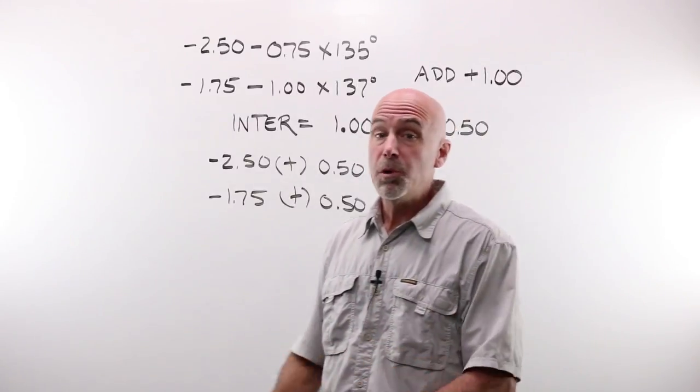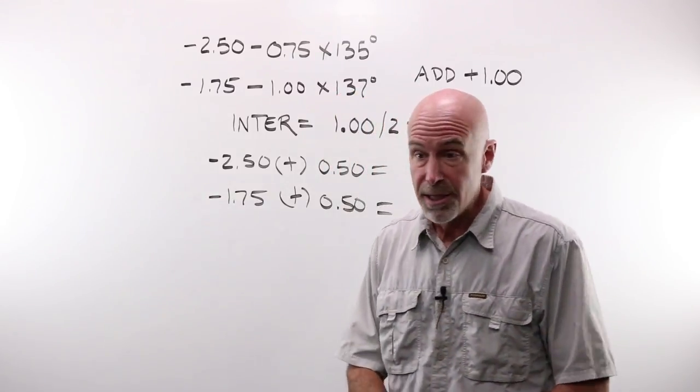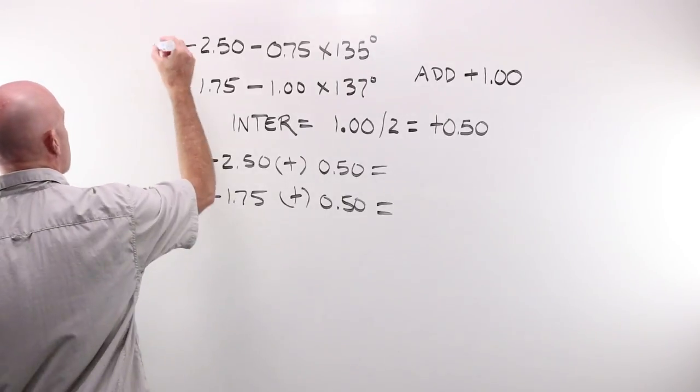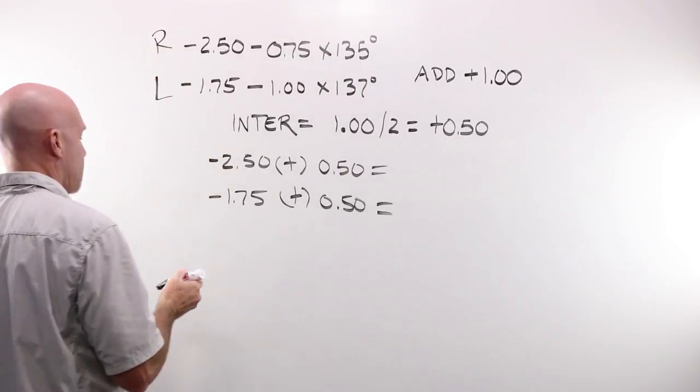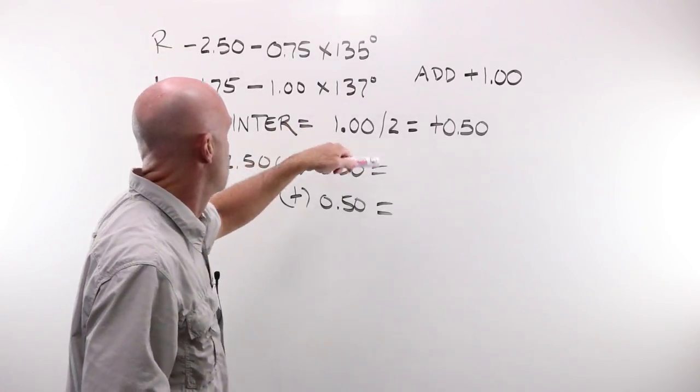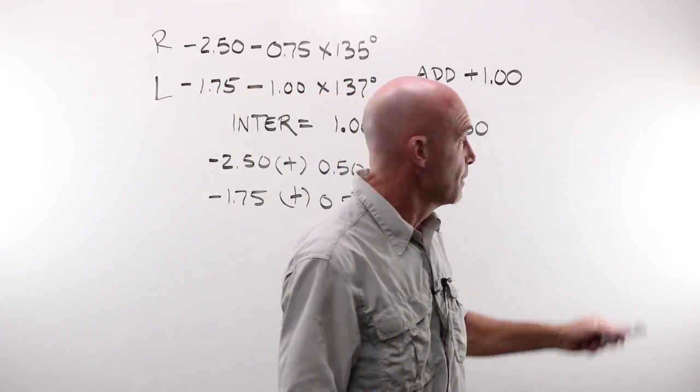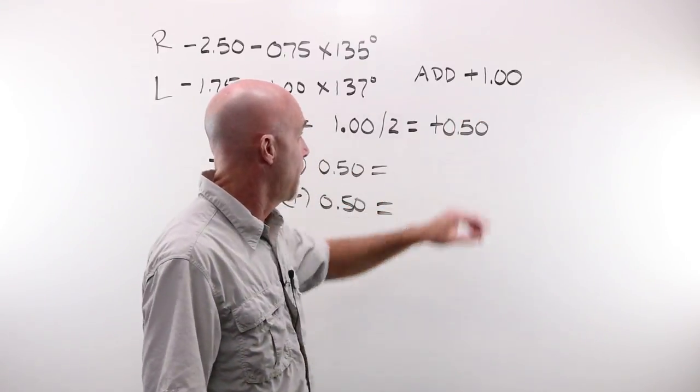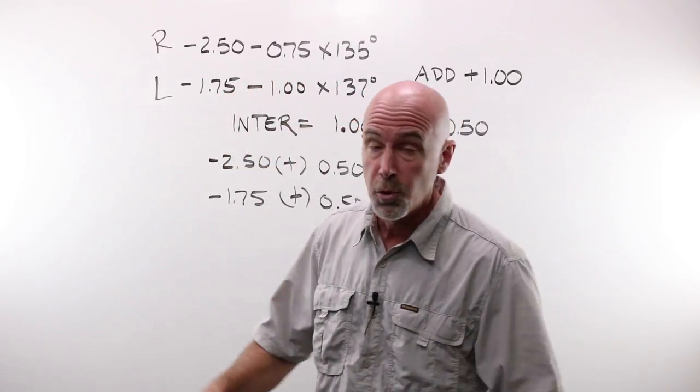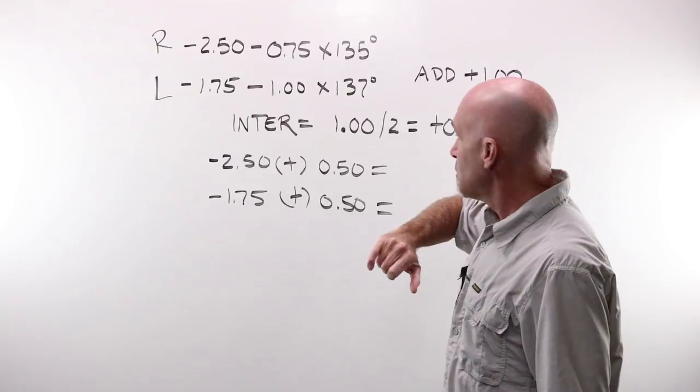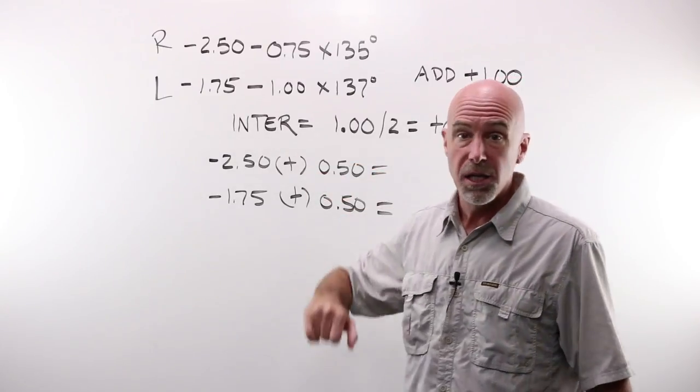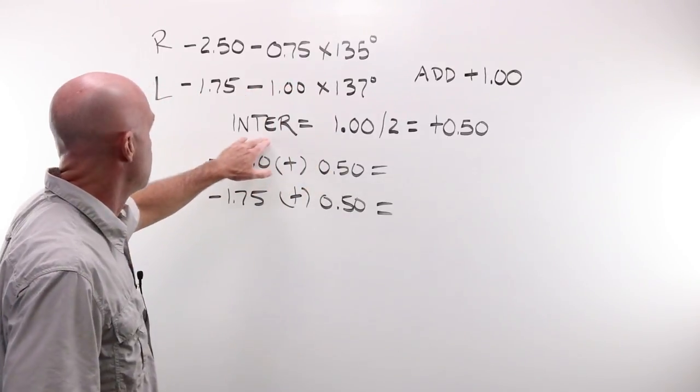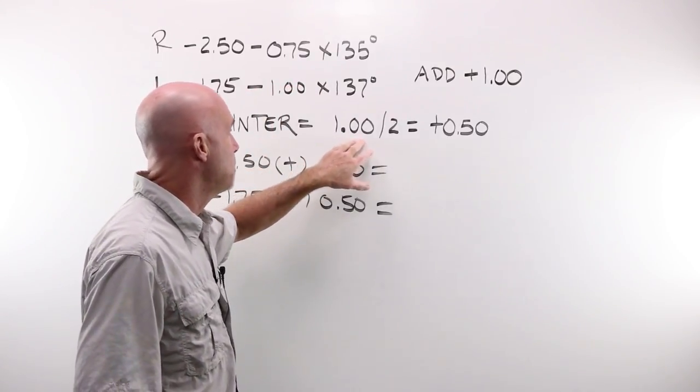Let's look at this example, extraordinarily realistic. -2.50 -0.75 at 135 in my right. In my left I've got -1.75 -1.00 at 137. This person just turned 46 years old, getting their first pair of glasses with an add power. However they tell you when they get to the dispensary that they would love to have an intermediate pair for the computer because they spend all day there. What do we need for intermediate? We need half of our add power.